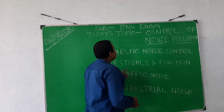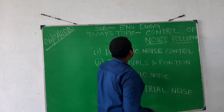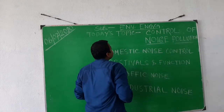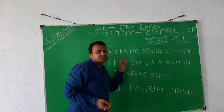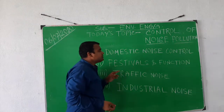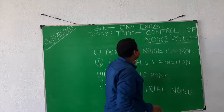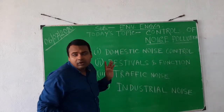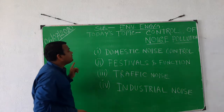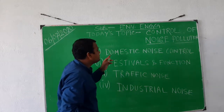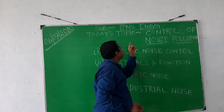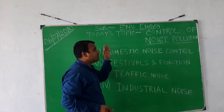First, environmental engineering. Environmental engineering is divided into two sections: water supply engineering and wastewater engineering. We have already completed water supply engineering, and wastewater engineering is the last section of that.